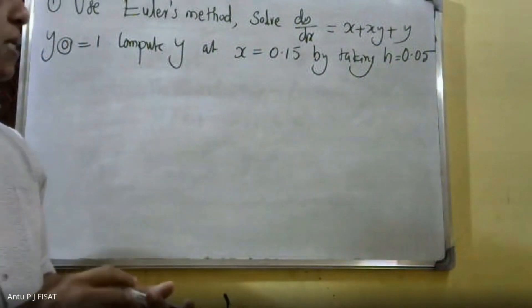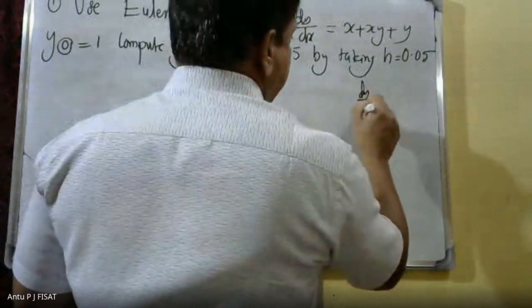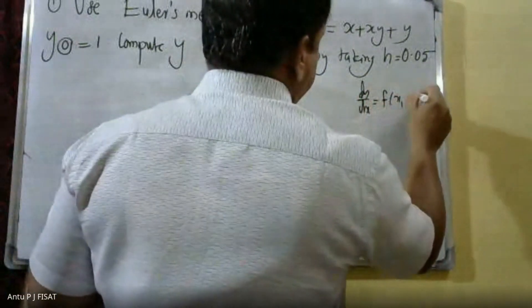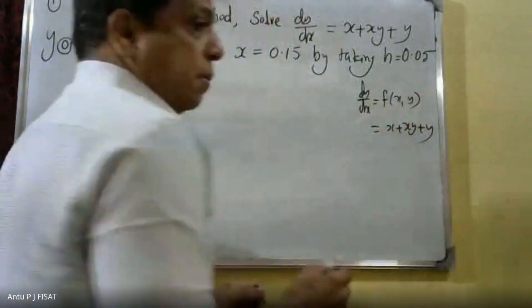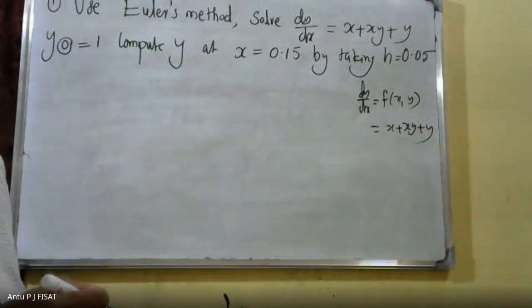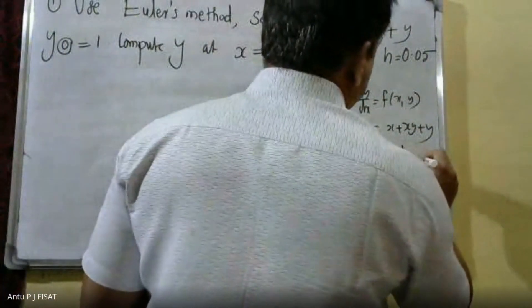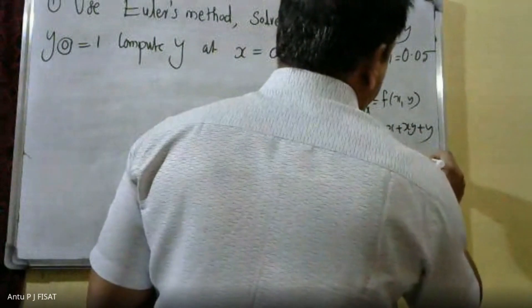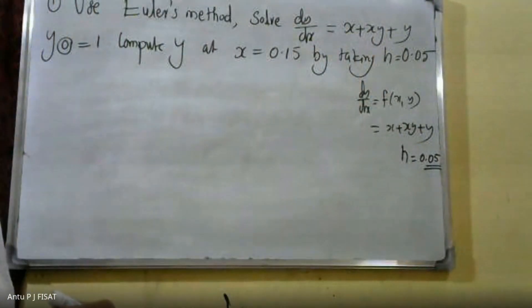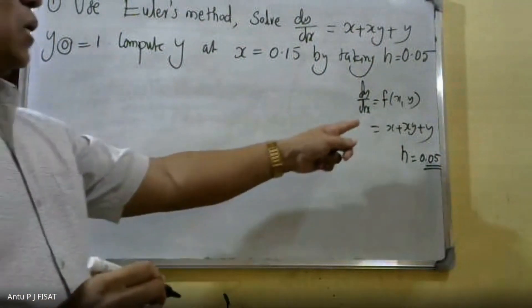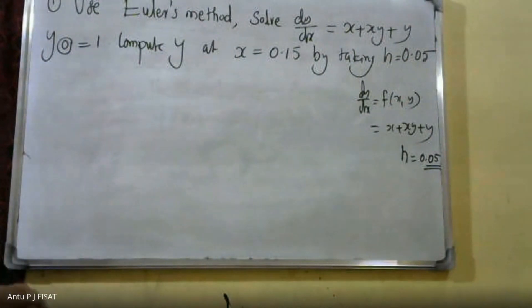In this case, dy/dx is given as f(x, y) = x + xy + y. Here h = 0.05 and dy/dx = x + xy + y is known as f(x, y). We use the formula.